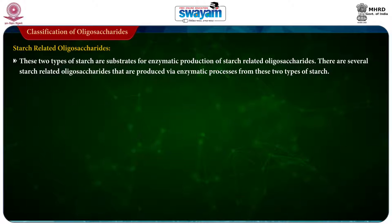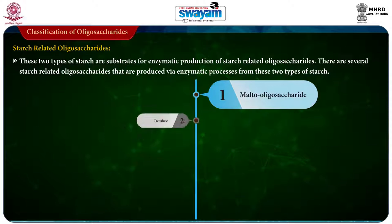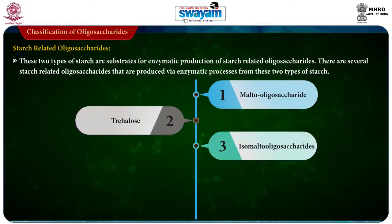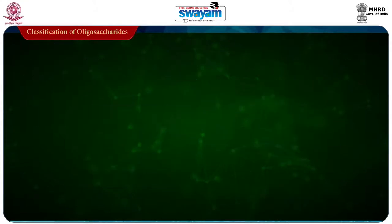There are several starch related oligosaccharides produced via enzymatic process from these two types of starches. They are malto oligosaccharides, trehalose oligosaccharides, isomaltase oligosaccharides, cyclodextrin, and nigero oligosaccharides.